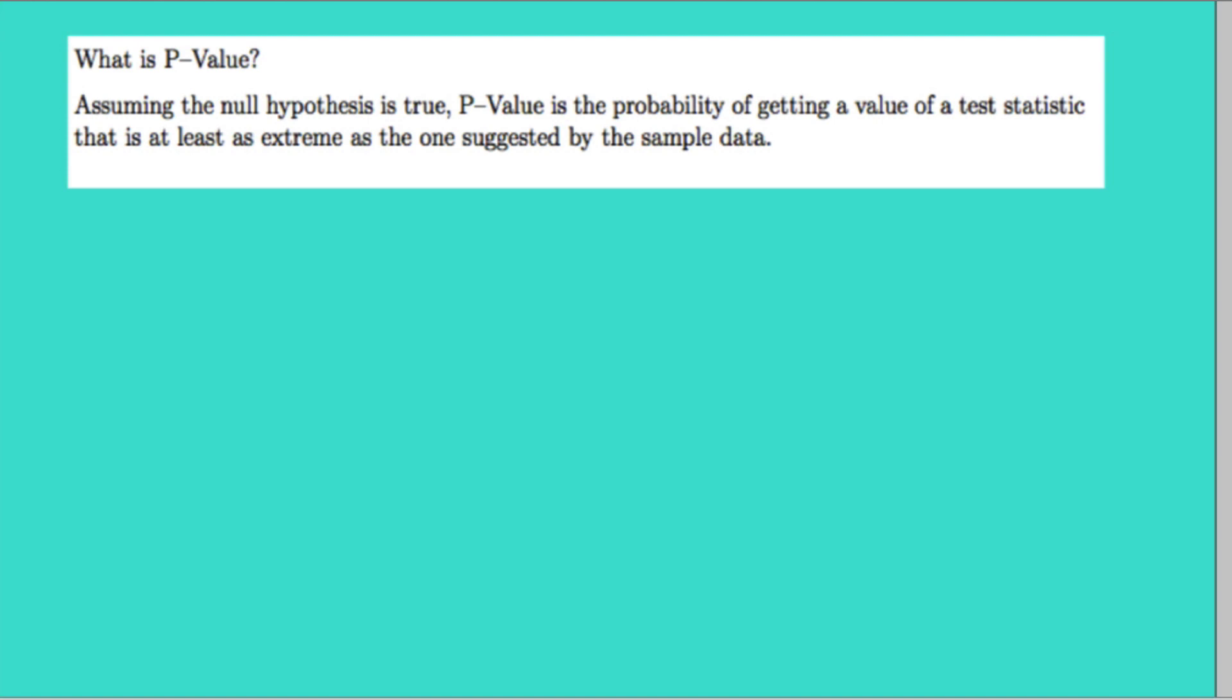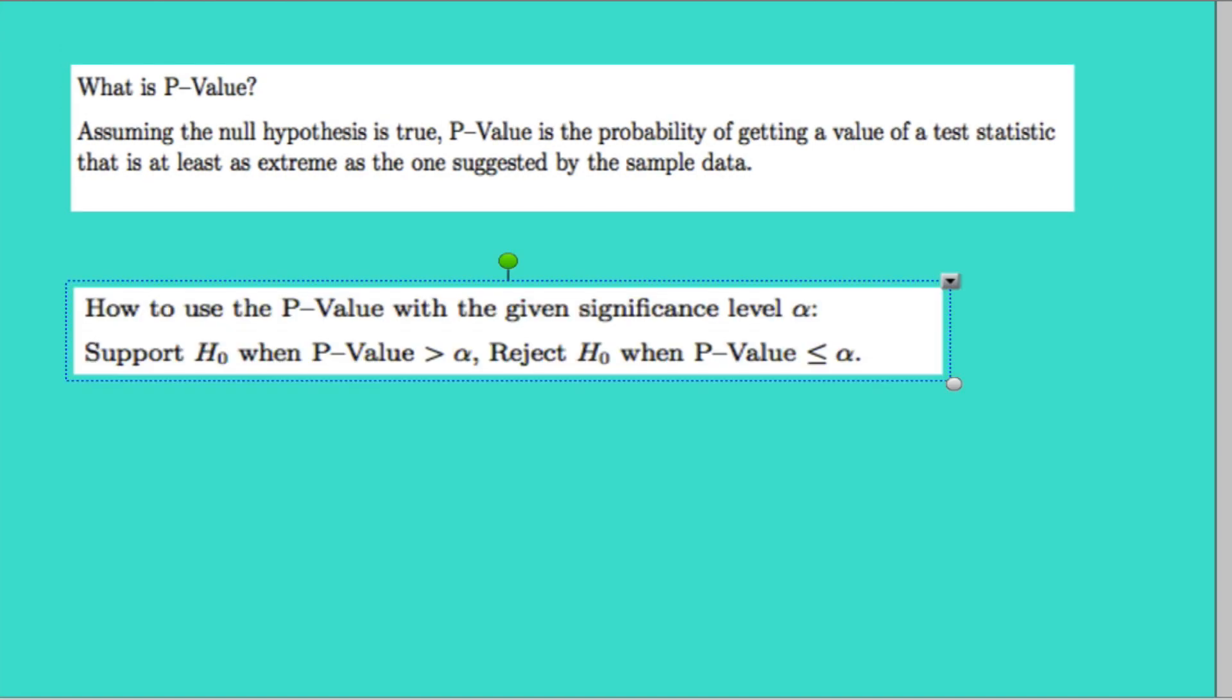The use of p-value is very straightforward. We're gonna support the null hypothesis anytime p-value is greater than the given significance level alpha, and we reject the null hypothesis anytime the p-value is less than or equal to alpha.